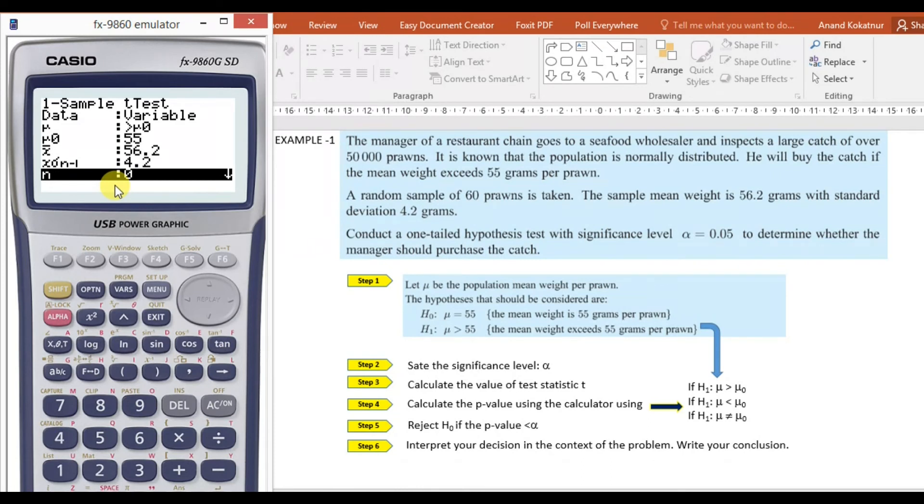When you execute the command, these are the values which come up. Your t value is 2.21 and your p-value is 0.0154.